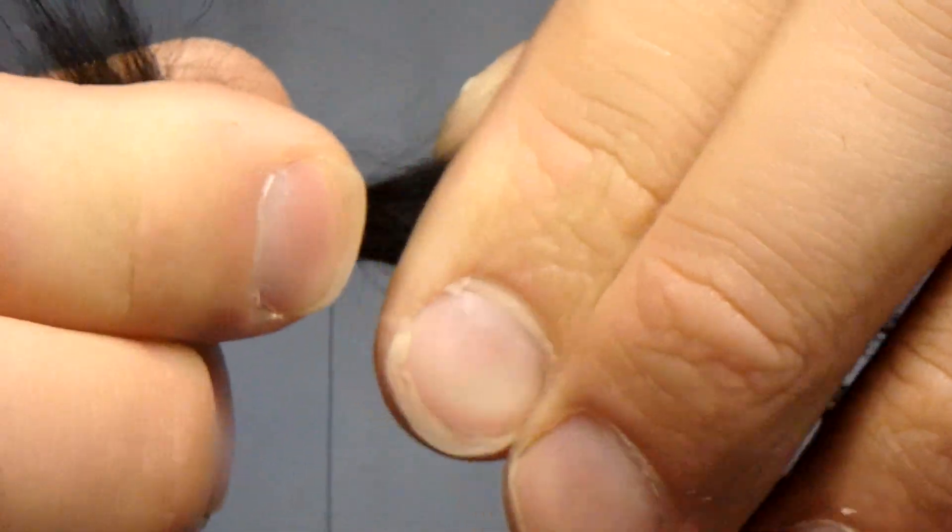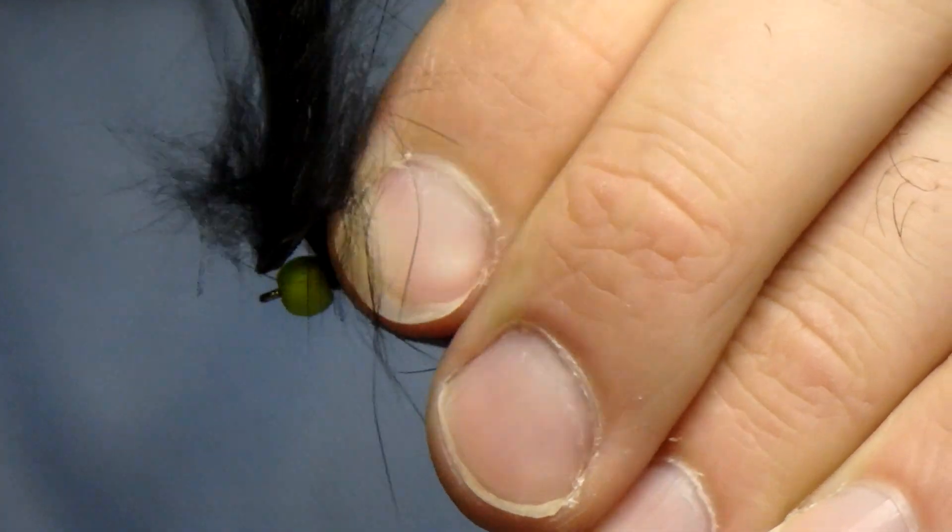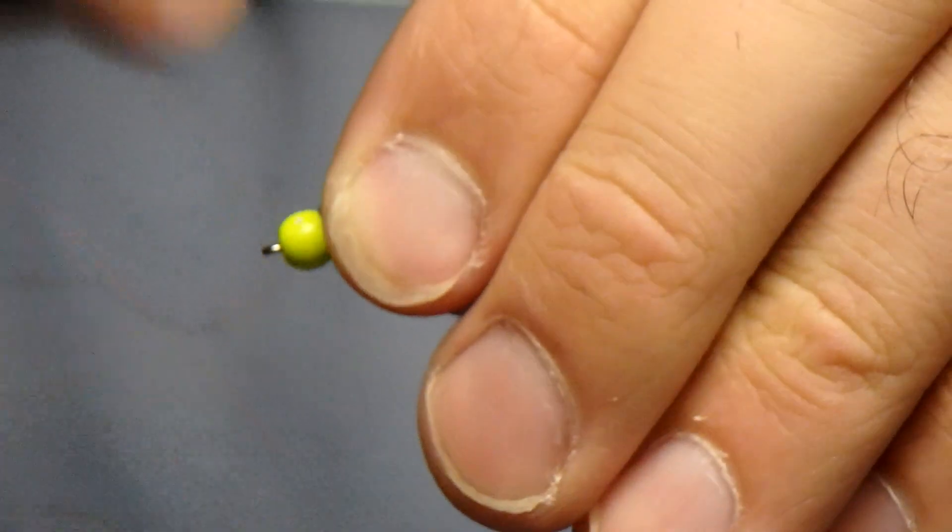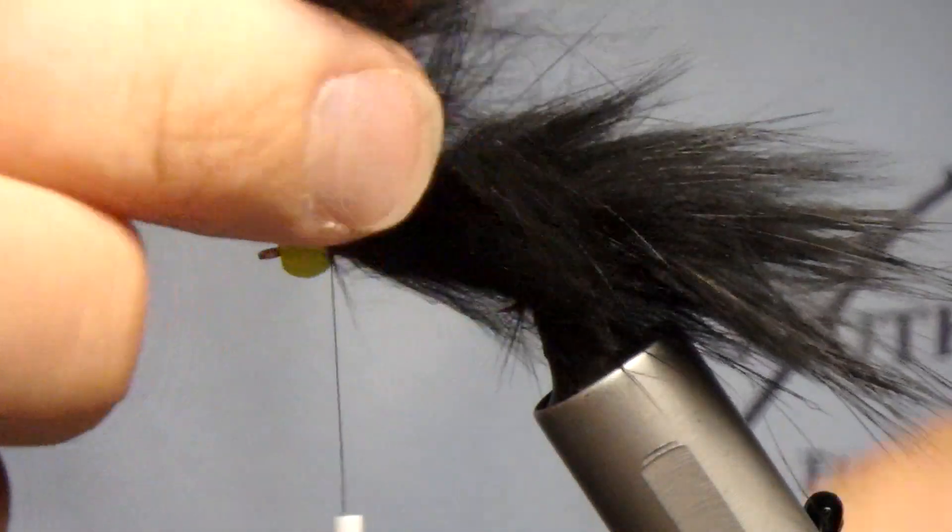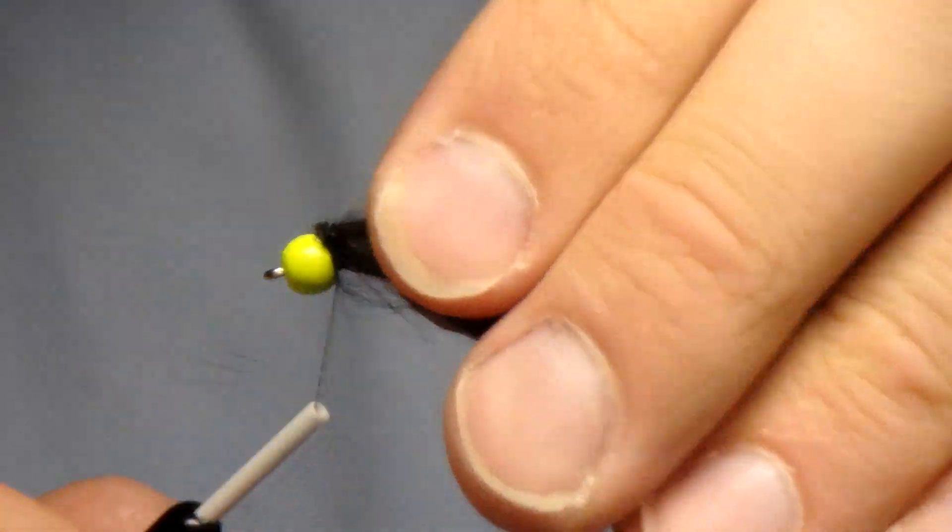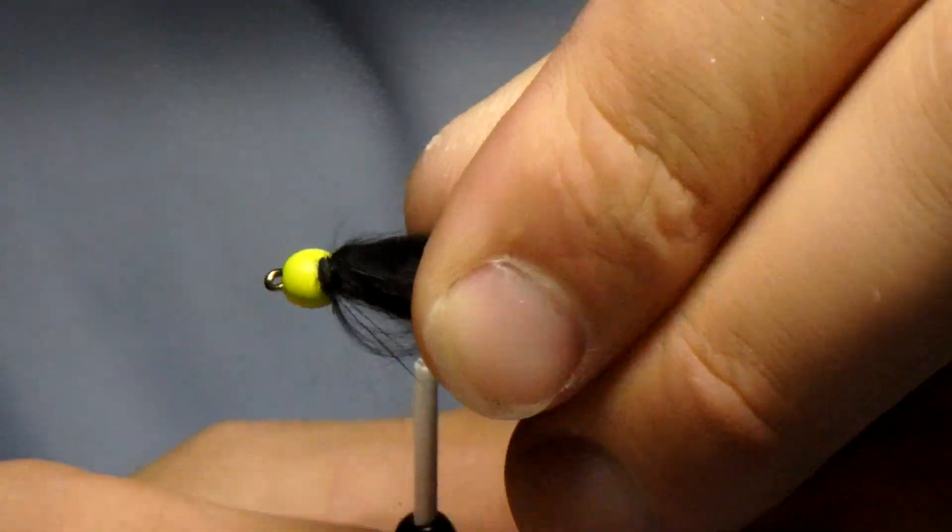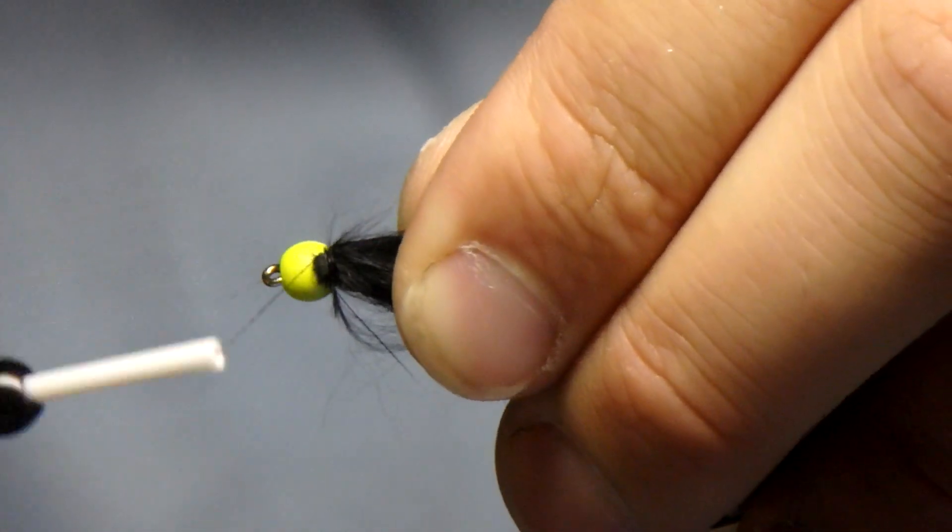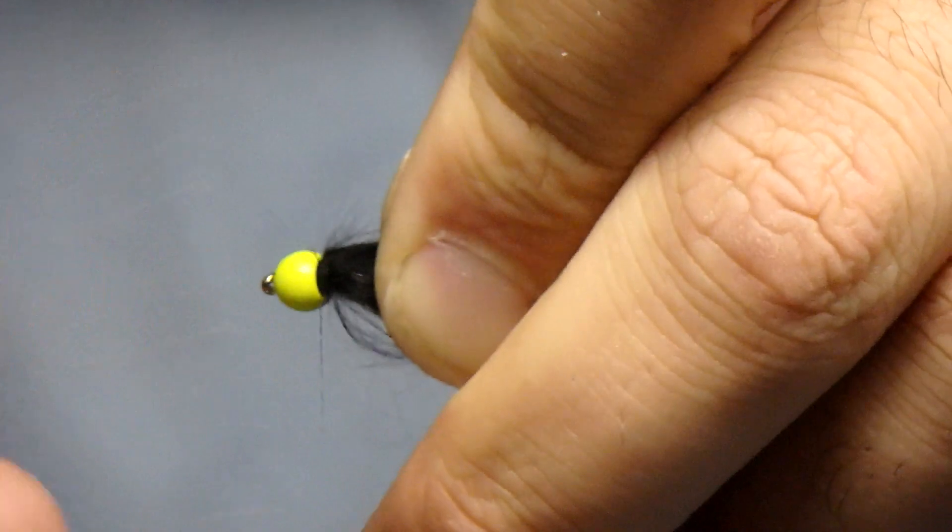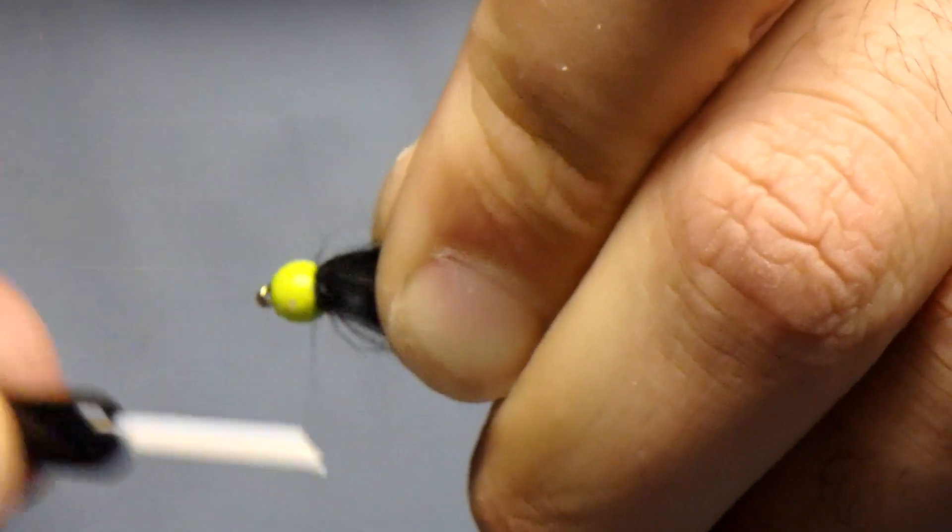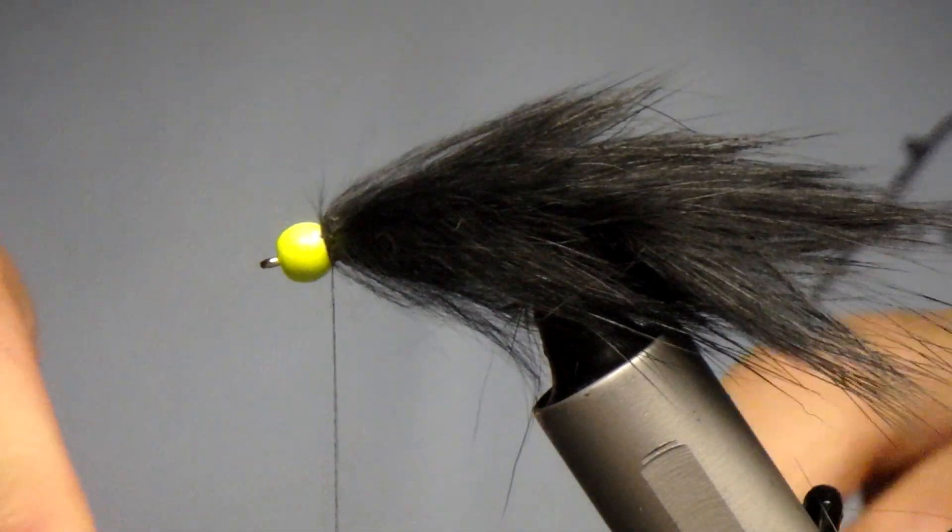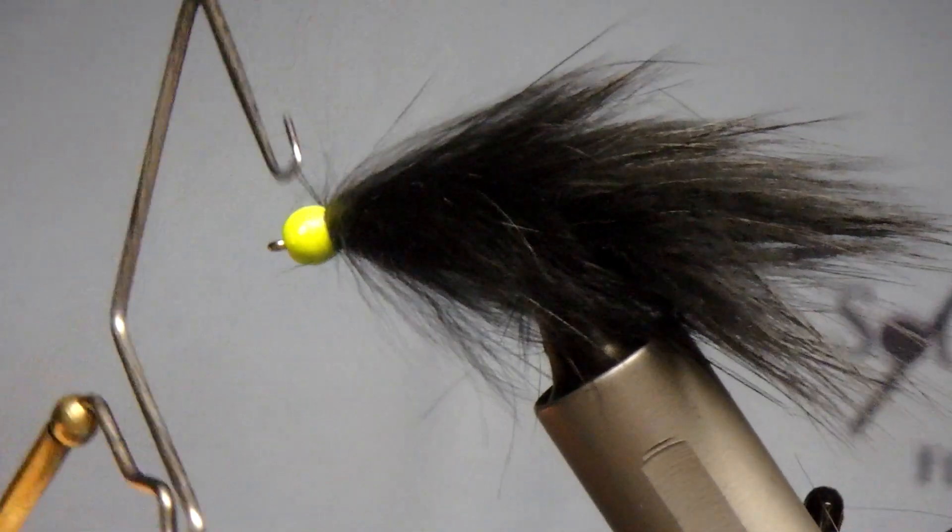And then once you get to the front separate out the fibers that you don't want. Tie that down good and tight. Nip the end of the zonker strip off. You can see you got a little nub. Got a little nub right there. You can get your thread right on top of that and adjust your bead as such. And it will go right underneath the bead. And all you got to do is whip finish and you're done.